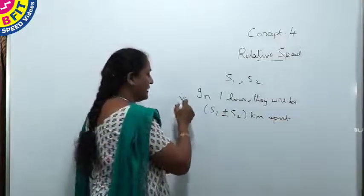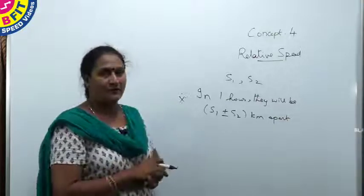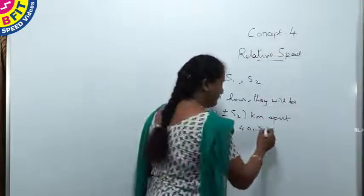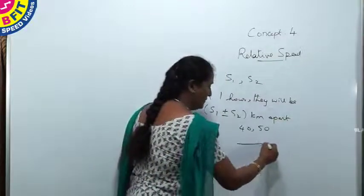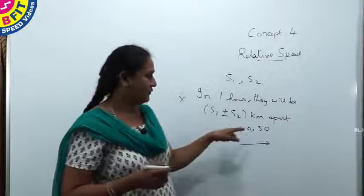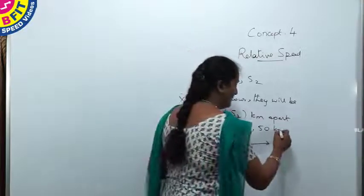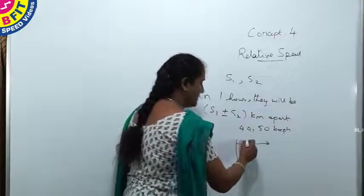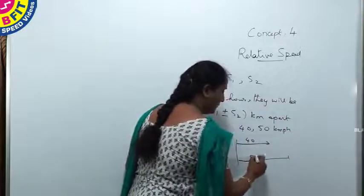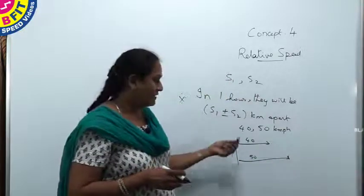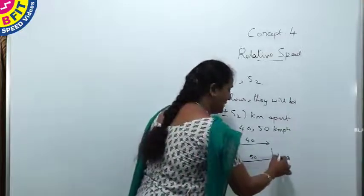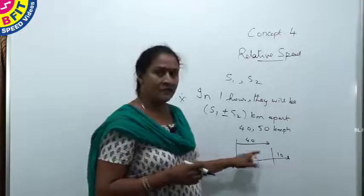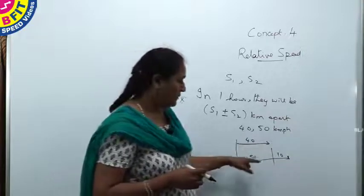As seen earlier, if the speed of two persons is 40 and 50 km/h and they are moving in the same direction, in one hour this person covers 40 kilometers and the other covers 50 kilometers. The difference between the two persons is 10 kilometers. So in one hour they will be S1 minus S2 kilometers apart — for the same direction, the difference in speed is the distance between them.